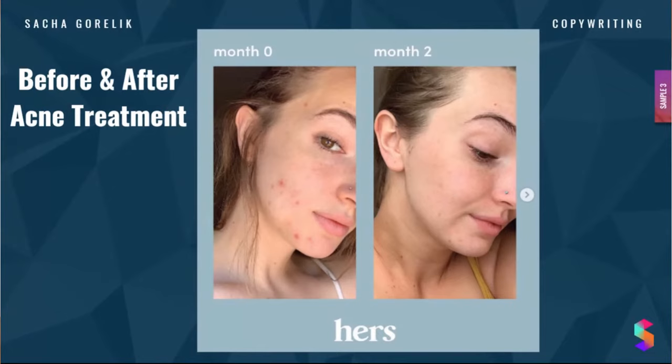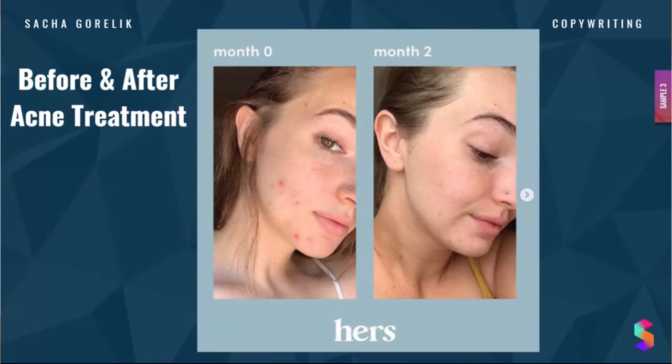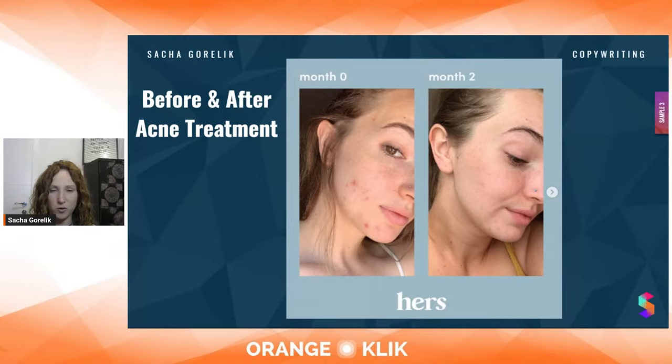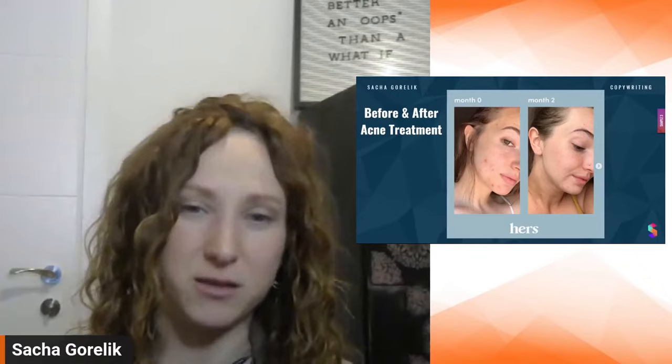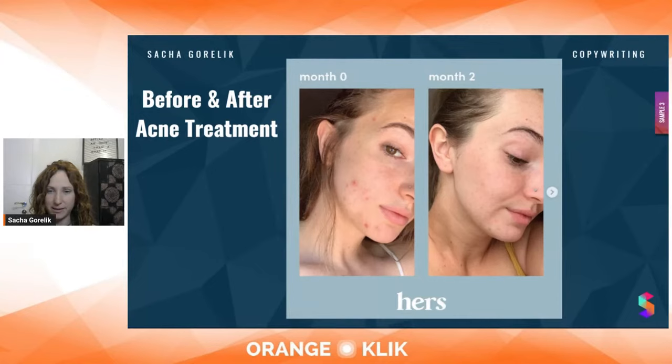Here's another example from a brand called Hers. This type of UGC is from Instagram, but they could totally post this on Amazon listings. It's showing a before and after. Before and after user photos are super powerful because they're so authentic. I've seen so many skincare brands showing before and after that is clearly Photoshopped. But this is super realistic — you can see the actual before and after of her skin. It's not completely flawless in month two, but it's better than it was in month zero.